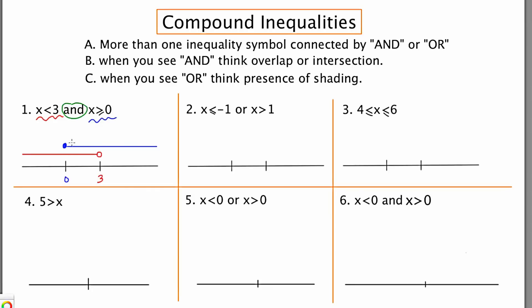The question I'm going to ask myself is: is there a place where blue is overlapping with red? And the answer is yes. It starts here at 0 and it ends at 3. To describe this solution set with interval notation, I'm going to say bracket 0, 3, parentheses.